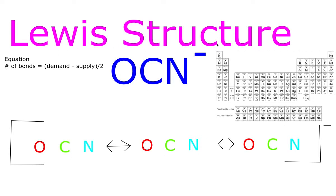For this Lewis structure example, we'll be drawing the molecule OCN⁻. Before we draw it, we should use this equation: number of bonds equals the demand minus the supply, all over 2. It will let us know how many bonds our molecule should contain.